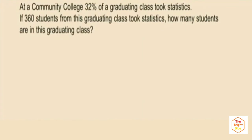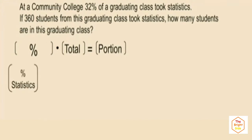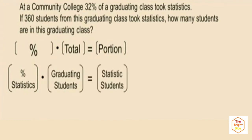At a community college, 32% of a graduating class took statistics. If 360 students from this graduating class took statistics, how many students are in this graduating class? We are looking for the total. We are given the portion — 360 students — and the percent — 32%. The structure is: percent times total equals portion, where 32% is the percent of statistics students, the total graduating class is unknown, and 360 is the number of students taking statistics.